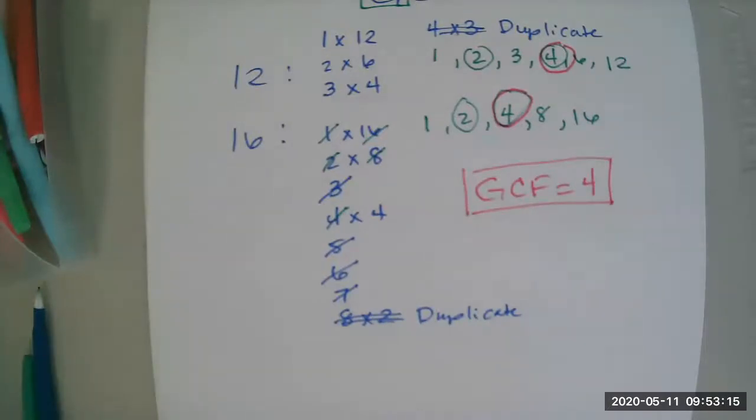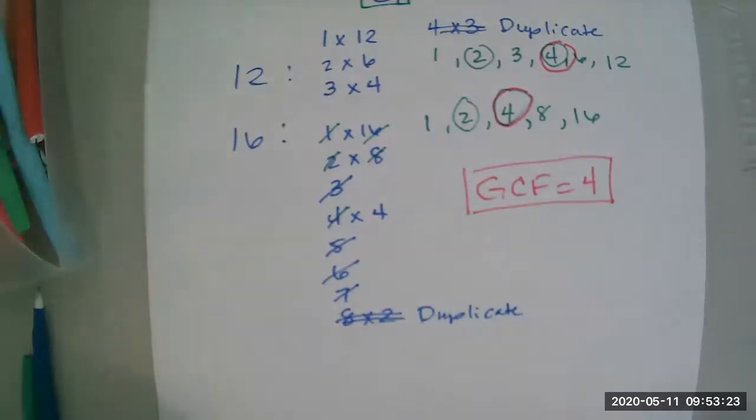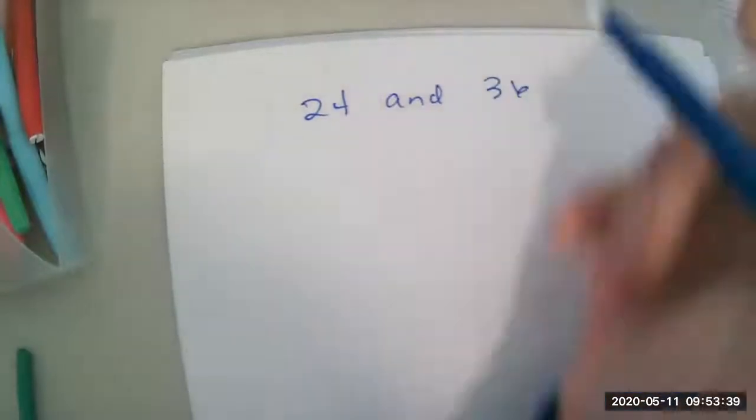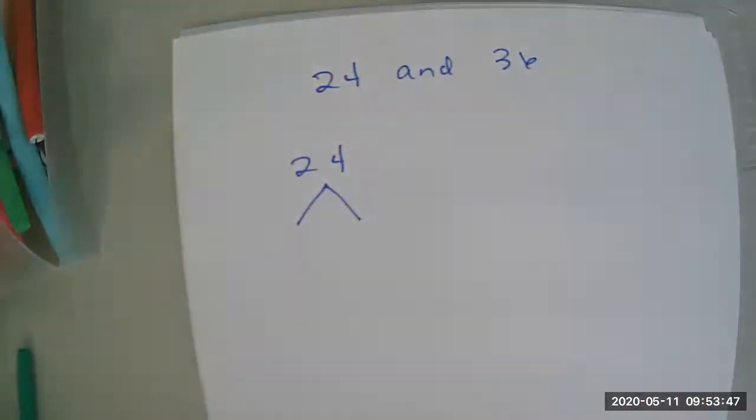Okay? So now I'm going to show you the second way. So this is just the traditional way. This second way involves prime factorization or a factor tree. So here's the second way. So we're going to find the prime factors of 24 and 36. A little bit bigger numbers here. So first thing I'm going to do is create a factor tree of both 24 and 36.